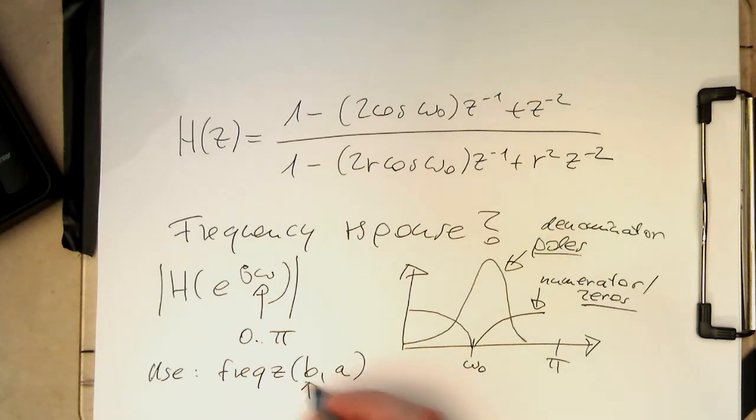So these are the numerator coefficients. And these are the denominator coefficients here. And so therefore it's very simple here.